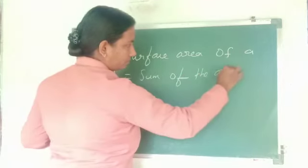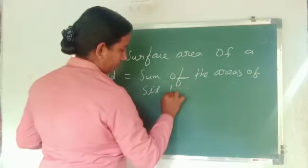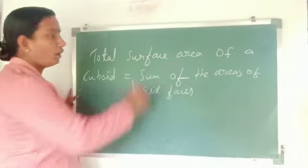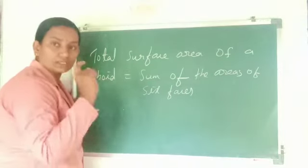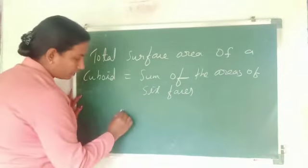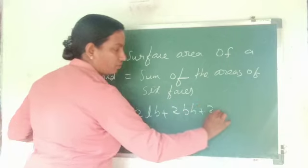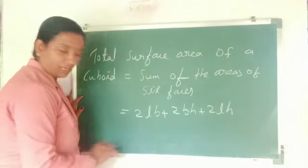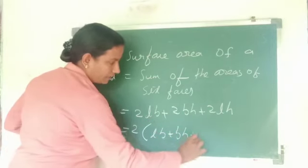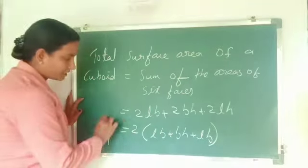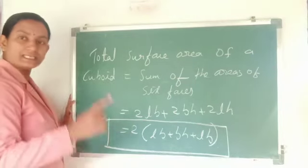Therefore, total surface area of a cuboid is equal to the sum of the areas of 6 faces. That is equal to 2 into LB, plus 2 into BH, plus 2 into LH. Taking 2 as common: 2 into (LB plus BH plus LH). So, surface area of a cuboid is equal to 2(LB + BH + LH).